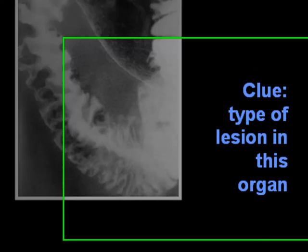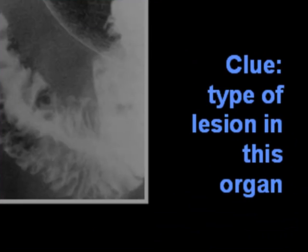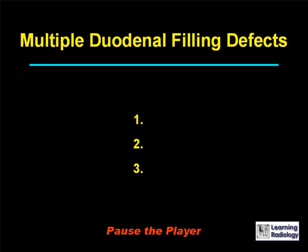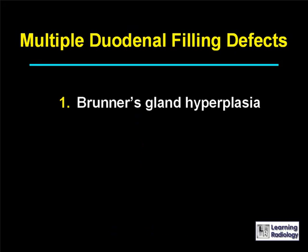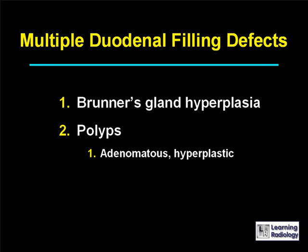The differential is multiple duodenal filling defects. There are three causes: Brunner's gland hyperplasia, polyps (either adenomatous or hyperplastic), and lymphoma.